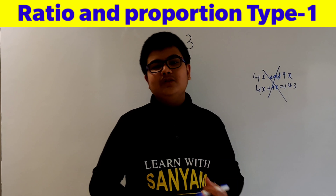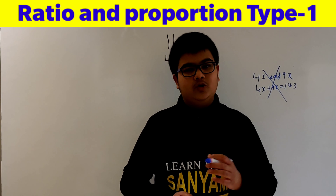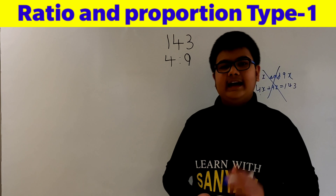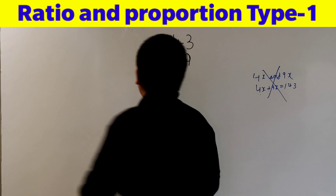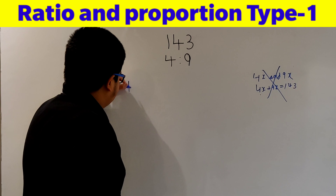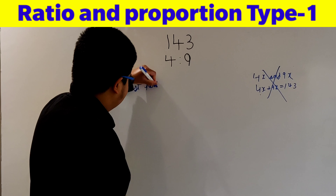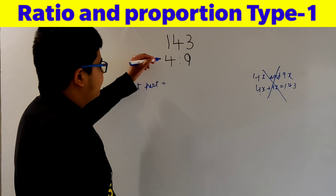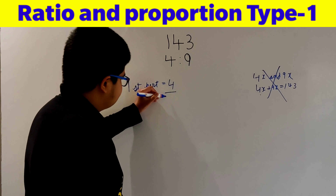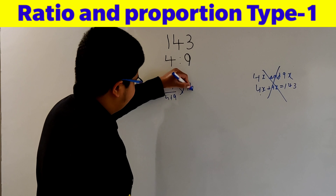This traditional method cannot be used in competitive exams where we have to save time and do more questions in less time. So for that I have a short trick. The short trick to solve this type of question is: the first number will be the first ratio divided by the sum of ratios, multiplied by the original number.